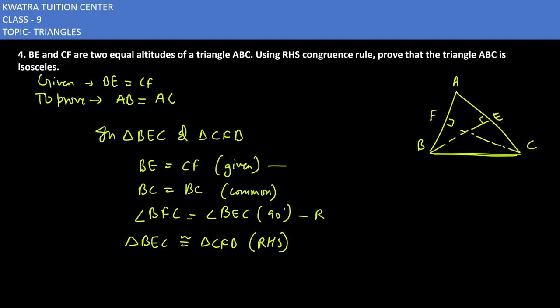This is your hypotenuse. BC is hypotenuse and this is one of the sides. RHS congruency.